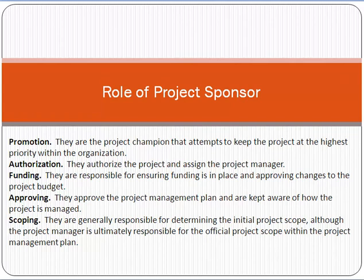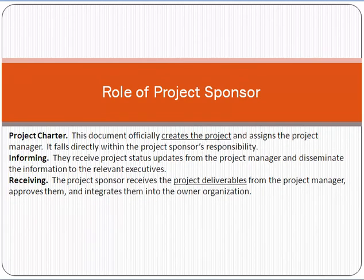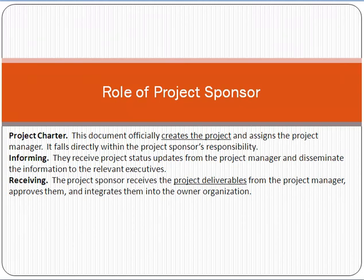Scoping — whatever scope of work is finalized in a project is reviewed and approved by the project sponsor, who holds the highest level of authority. All scope, funding changes, and technical reviews ultimately reach the project sponsor's desk for final approval or rejection. The project sponsor also approves the project charter — the document that officially creates a project and nominates the project manager. Finally, the sponsor receives project status updates and deliverables from the project manager.